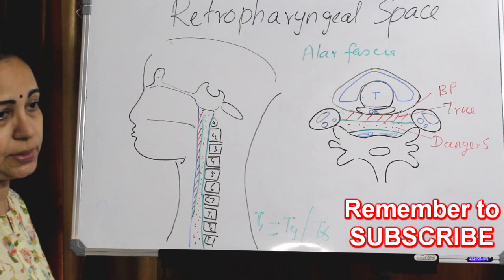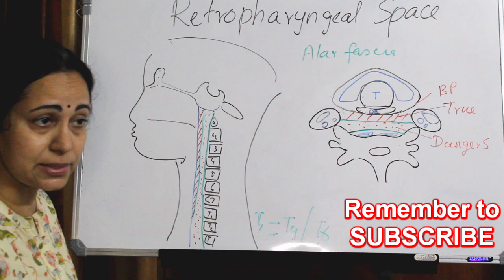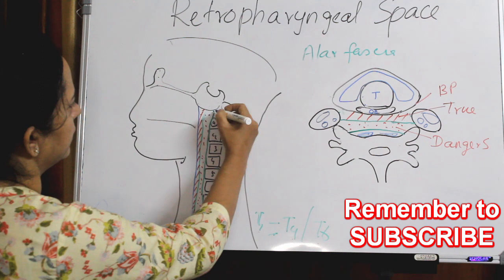So if there is an abscess collection, this retropharyngeal space will bulge, as we have seen in the X-ray. Behind that we have the prevertebral space, which is yet another space that I will explain later.